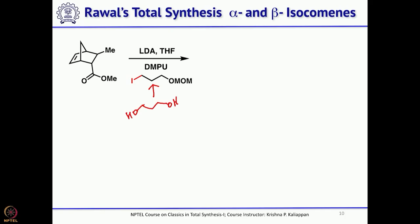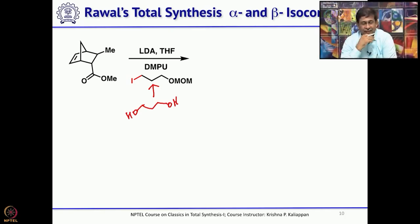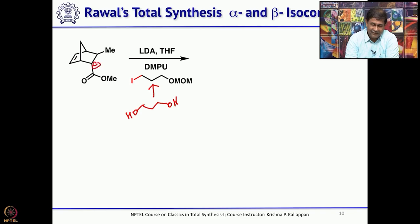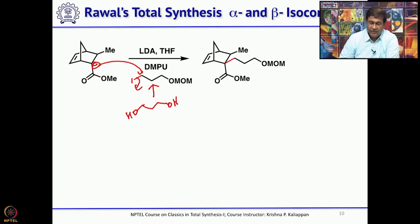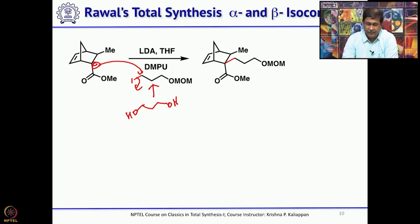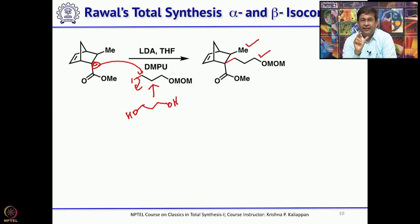You protect one alcohol as a MOM ether, convert the other alcohol to a mesylate, then treat with sodium iodide to get the iodo compound. The anion is generated and quenched with this iodide; the alkylation goes stereoselectively to the exo position. The methyl group and the three-carbon side chain are now cis to each other, and this stereochemistry will be maintained in the next step.